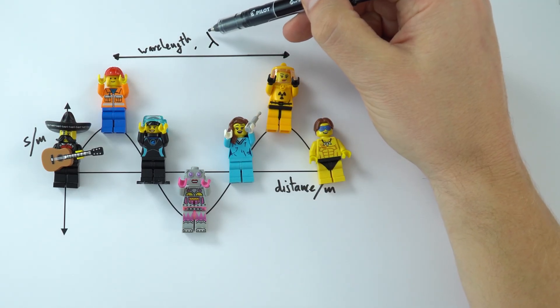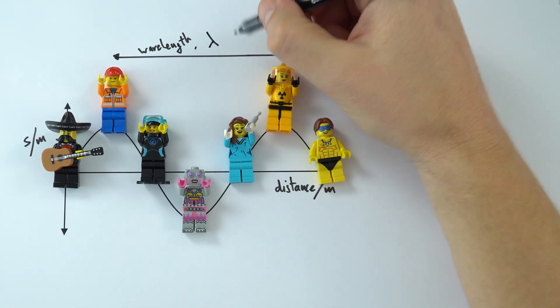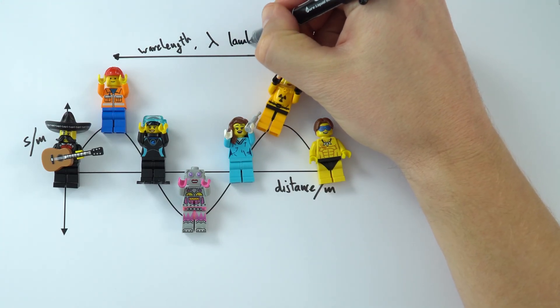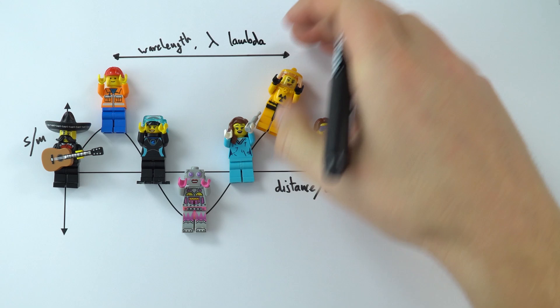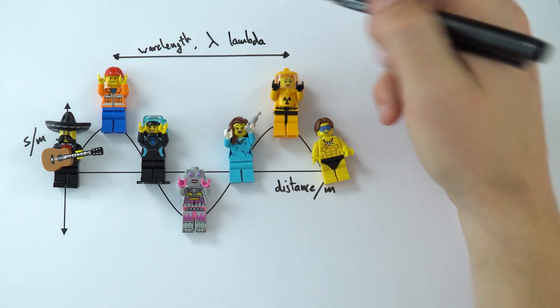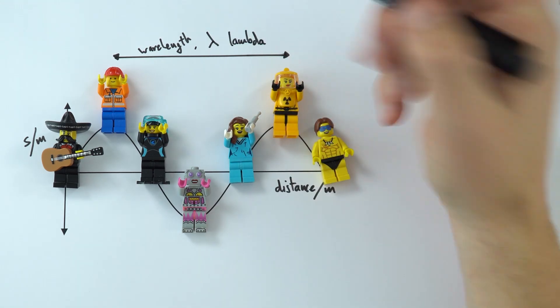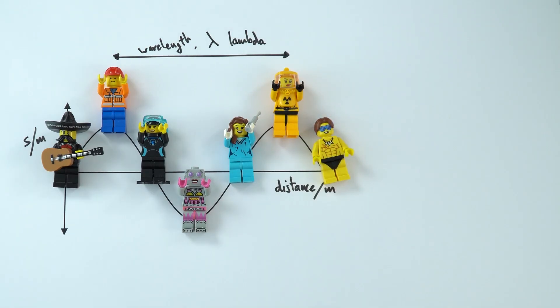So lambda is like a capital Y but it's kind of upside down. So lambda is our Greek letter that we use to represent wavelength. It's probably the first time you've come across this new symbol, but that's basically all it represents. It's just the length of one wave.